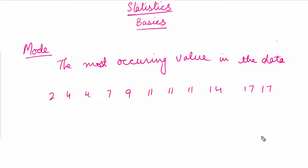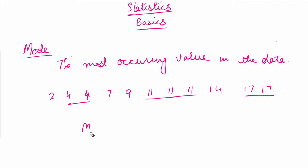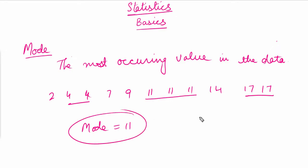In this data, 4 has been repeated twice, 11 has been repeated thrice, and 17 has been repeated twice. So the most occurring value in this data is 11. We can say the mode of this data is equal to 11. This is the basic concept to find the mode.